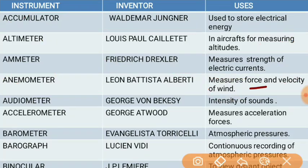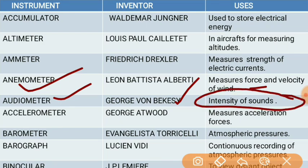Next is the audiometer. The audiometer was invented by Leon George van Bekke. The audiometer is used to measure the intensity of sound. Since it contains the word 'audio,' it is easy to remember that it is related to sound.